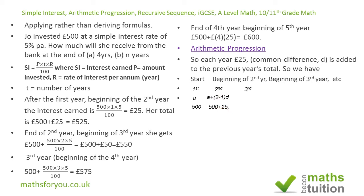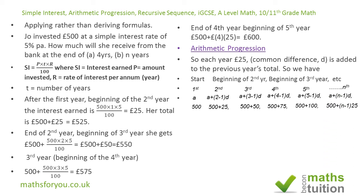For the fifth term, which is the end of the fourth year: (5-1)×25 = 4×25 = 100, giving £500 + £100 = £600. For the general nth term, the end of the (n-1)th year, she gets £500 + 25(n-1). Equivalently, for the (n+1)th term — which gives the value at the end of the nth year — she gets £500 + 25n.